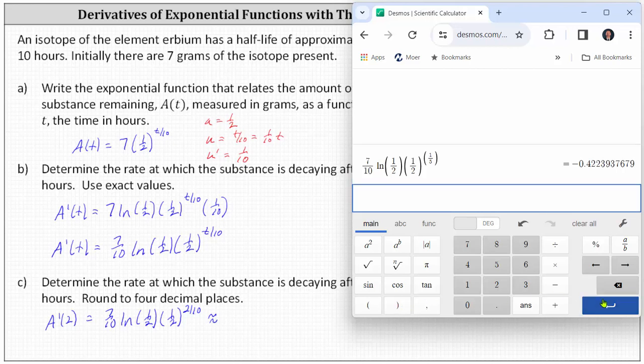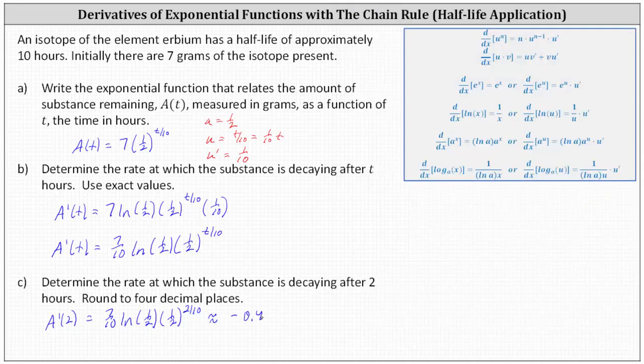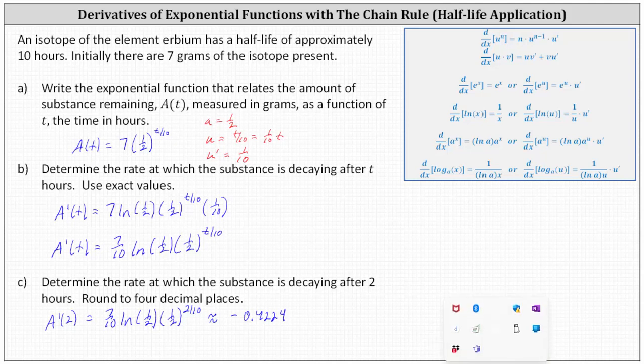Rounded to four decimal places, we have approximately negative 0.4224. The units on this rate would be grams per hour. So again, after two hours, the substance is decaying at a rate of negative 0.4224 grams per hour. I hope you found this helpful.